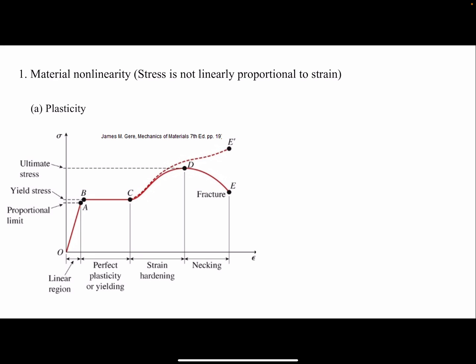In the elastic region we only need the elastic modulus. The slope of the stress-strain curve will give us the elastic modulus, and that would be enough to model our material in a standard FEA. But if we are modeling plasticity, we have to use more than one modulus, and we call these moduli tangent moduli. We have multiple moduli.